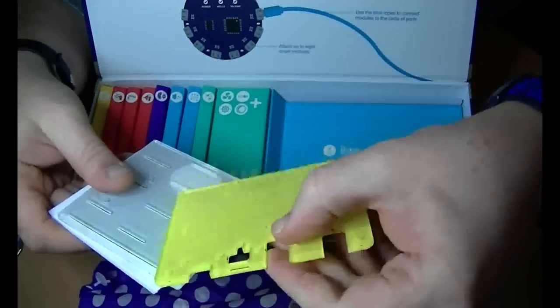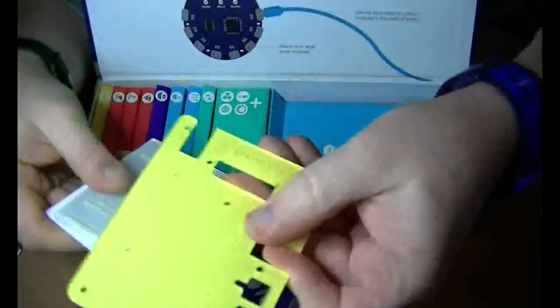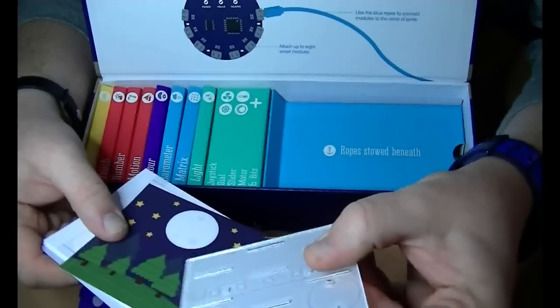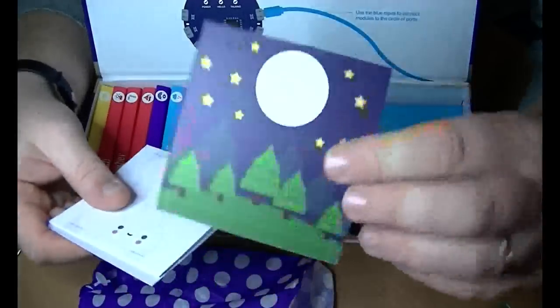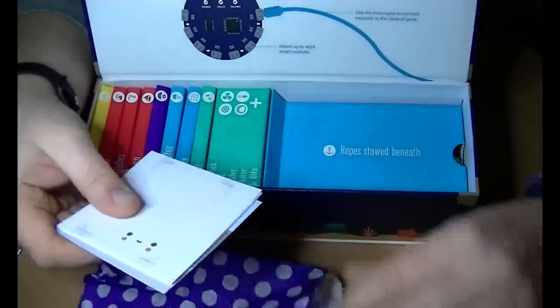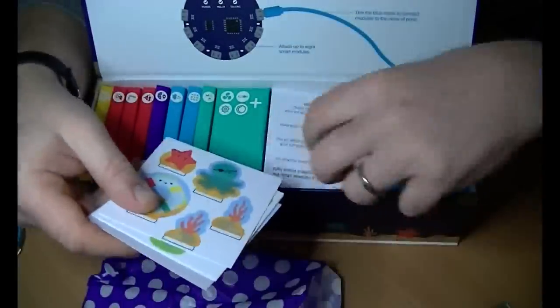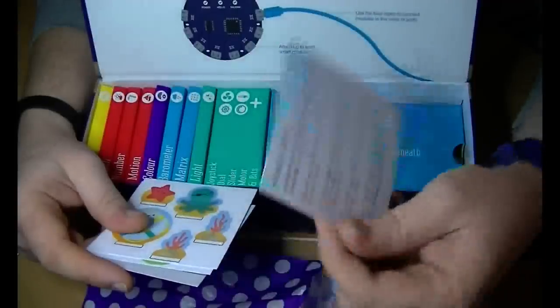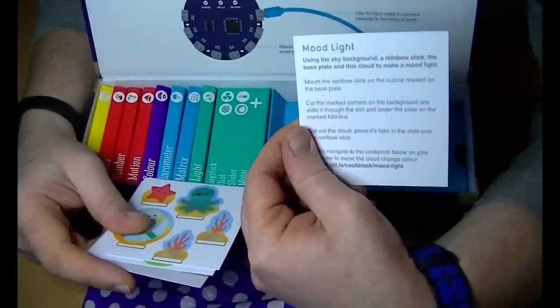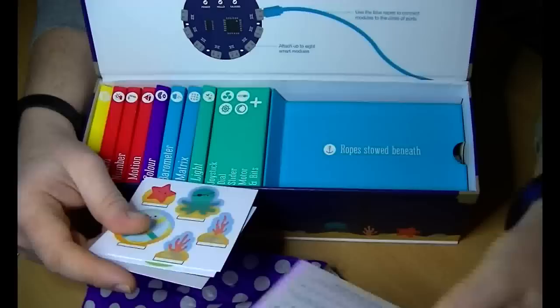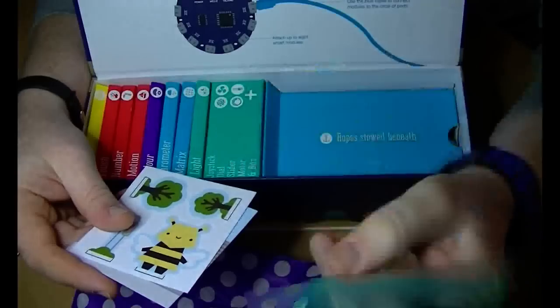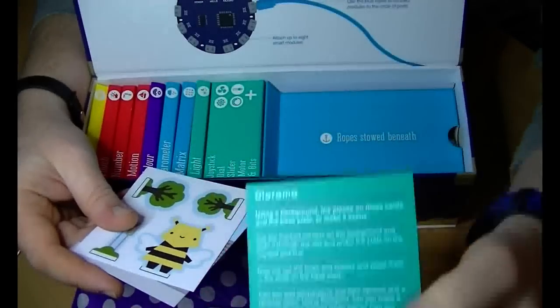I'm sure this will all become obvious in a minute when we get down to the recipe cards. Here we go, so we have some images here and on the back is your recipe card. This is for a mood light, and on the back of that one, this one is a diorama.